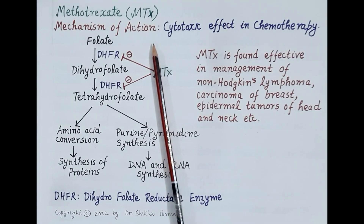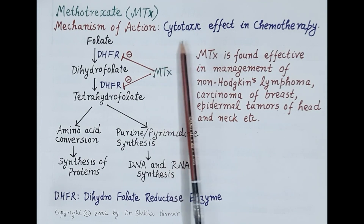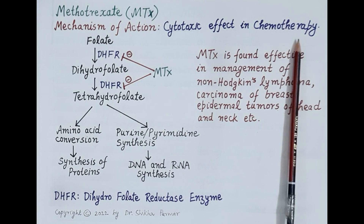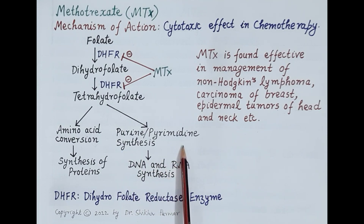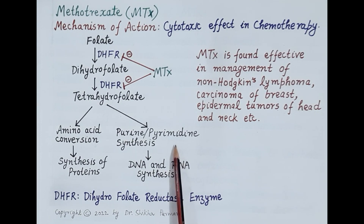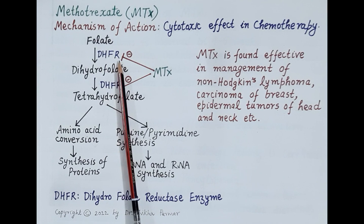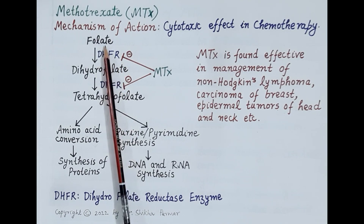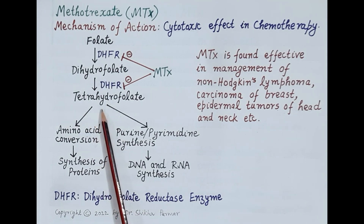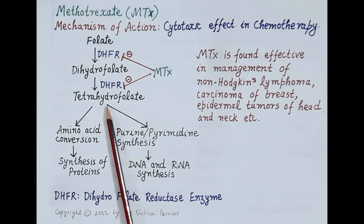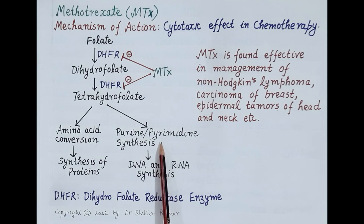Now let's discuss the mechanism by which methotrexate produces cytotoxic effect in chemotherapy. Folates are necessary for the synthesis of purine and pyrimidine nitrogenous bases, which are required for synthesis of DNA and RNA. The enzyme dihydrofolate reductase catalyzes conversion of folate to dihydrofolate, which is further converted to tetrahydrofolate, required for the synthesis of purines and pyrimidines.